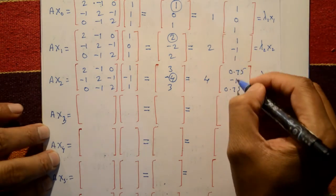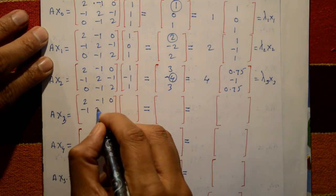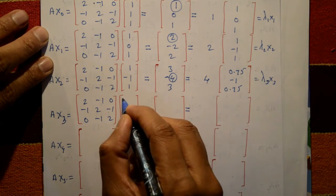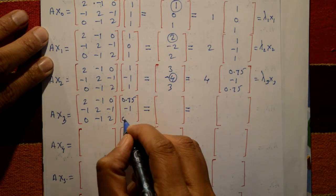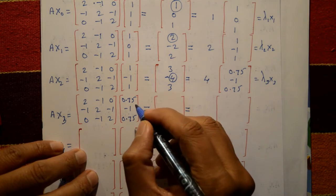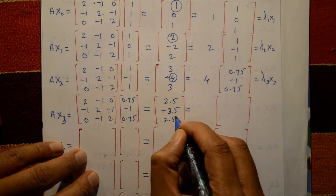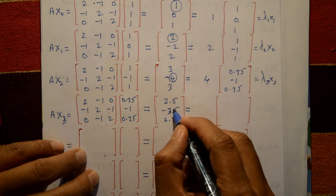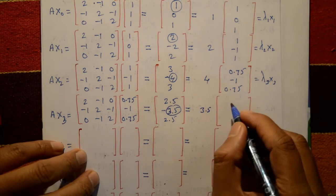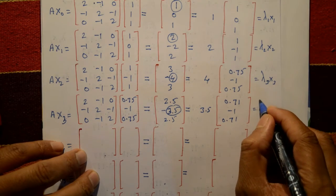Fourth iteration: A × x3 with x3 = [0.75, -1, 0.75]ᵀ. Matrix multiplication gives [2.5, -3.5, 2.5]. The largest element is 3.5; take 3.5 outside, giving λ₄ = 3.5 and x4 = [0.71, -1, 0.71].